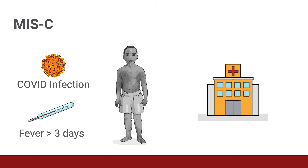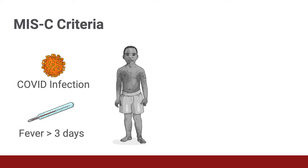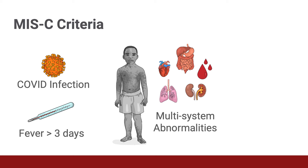Next, we will delve into the criteria to diagnose MIS-C. MIS-C is defined by a number of specific criteria. These include children less than 19 years of age and a recently identified COVID infection or suspected COVID infection. In addition, the diagnosis would also need the child to have fever greater than three days and several multi-system abnormalities as seen by physical exam findings like rash or specific lab findings to complete the MIS-C diagnosis. Now, let's discuss these criteria in a little bit more detail.